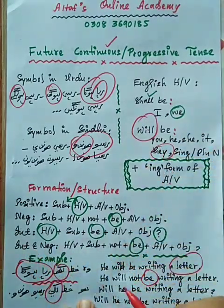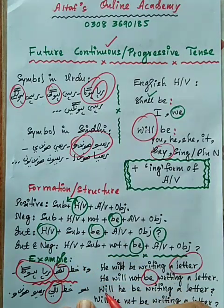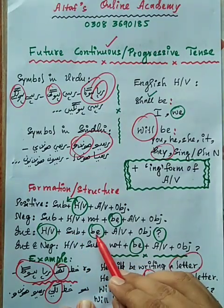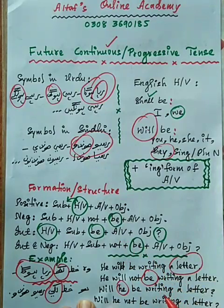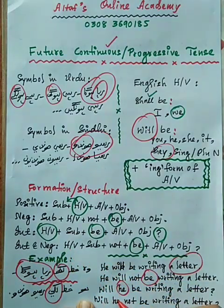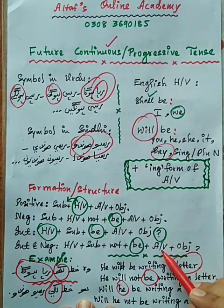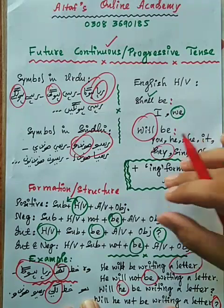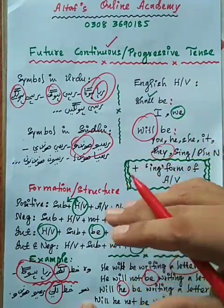Agar sentence interrogative mein hai to sabse pehle helping verb rakhenge 'will', kyunki subject 'he' hai — 'he' ke saath 'will' lagta hai. Yahan sirf pehla word 'will' rakhenge, uske baad subject 'he', uske baad 'be', uske baad action verb ki -ing form 'writing', aakhir mein object 'a letter', question mark. Interrogative-negative mein: will, he, not, be, writing, a letter, question mark. Yeh sentence convert ho gaya.